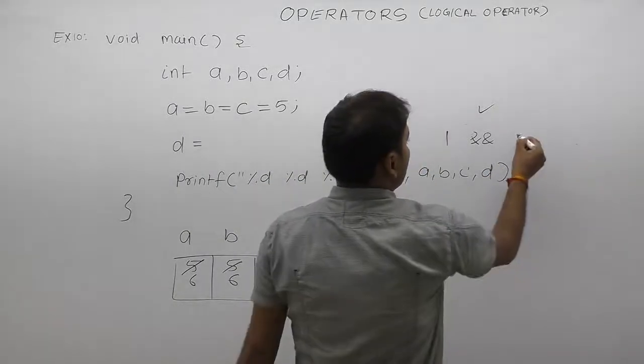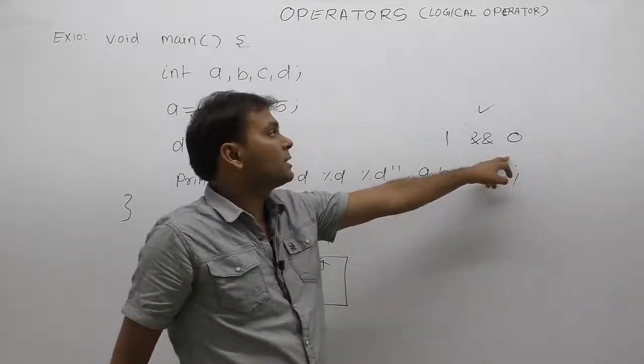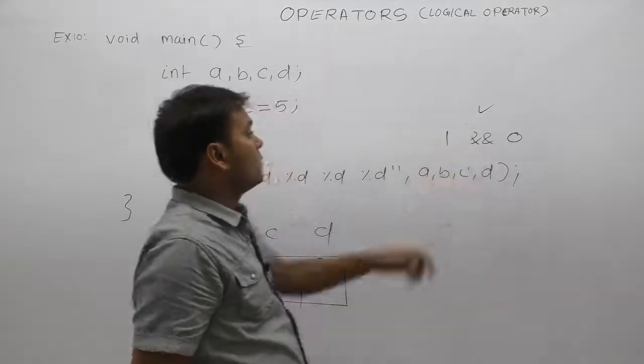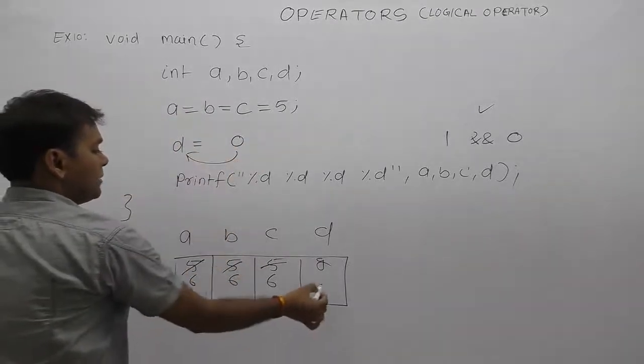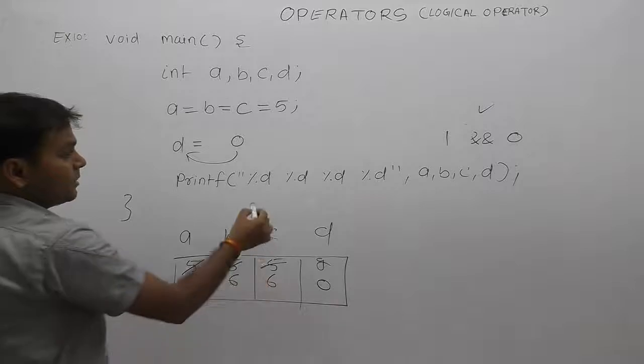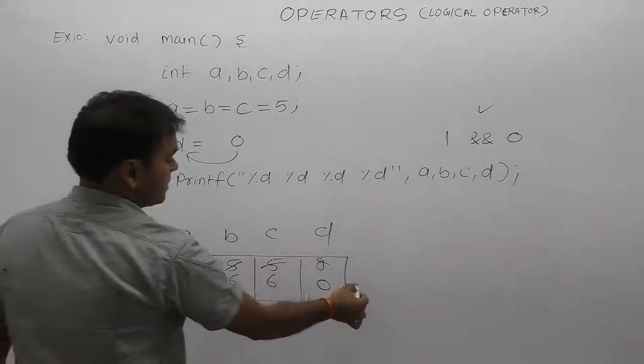False means 0. AND - first condition true again, second condition false. False means 0. 0 is assigned to the variable d. Now d becomes 0. Therefore, output is printed: value of a, b, c, d is 6, 6, 6, 0. This is the output.